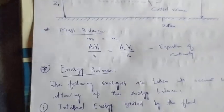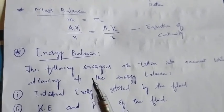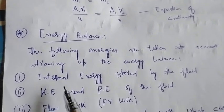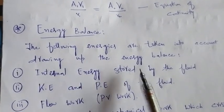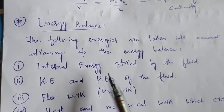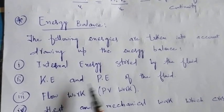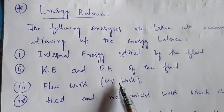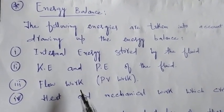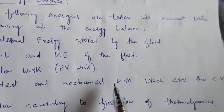Now after doing the mass balance we will continue with the energy balance. When dealing with the energy balance we have to consider different types of energies crossing the control volume. First is the internal energy of the fluid stored in the fluid. Second is kinetic energy and potential energy of the fluid, since the fluid is in motion. Third is flow work, or pressure-volume work, required to push the fluid into and out of the control volume. Last is heat input to the system and mechanical work done across the control volume.